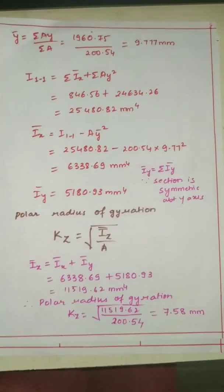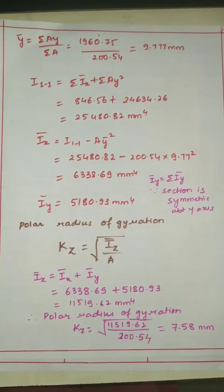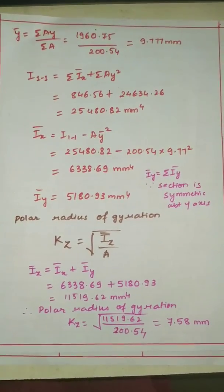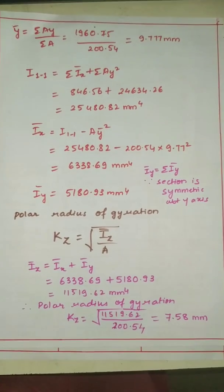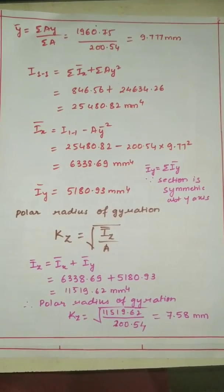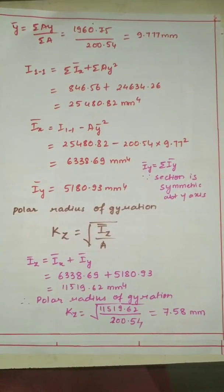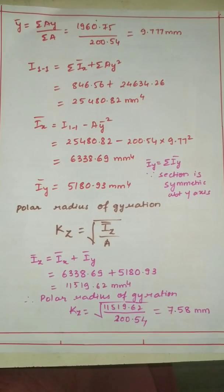A few students have asked why I_ȳ equals the summation of I_ȳ. Because this section is symmetrical about the Y-axis, I_ȳ equals the summation of I_ȳ directly.